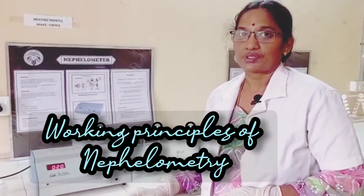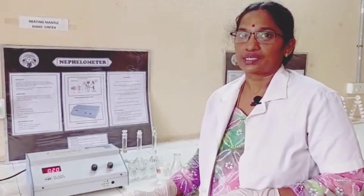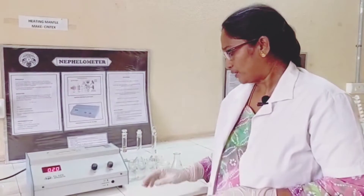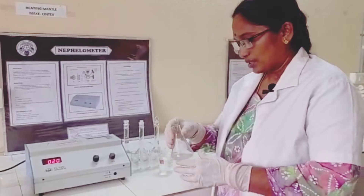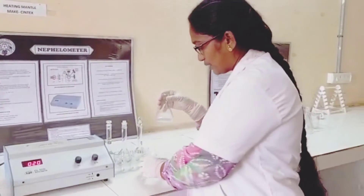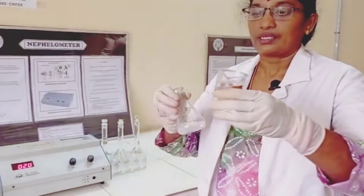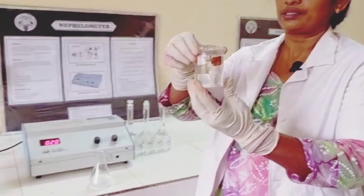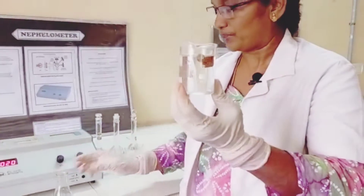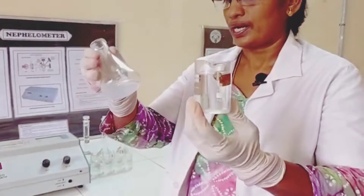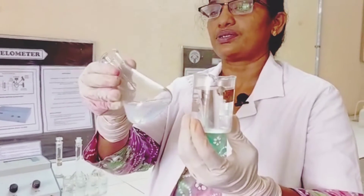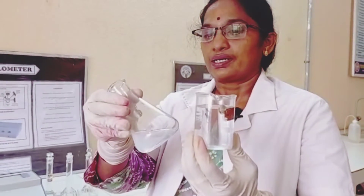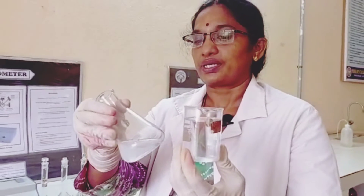Till now in my previous videos I have shown different estimations using spectroscopy where the solutions that were estimated were clear in nature. Today we are going to estimate solutions that are turbid and cloudy in nature. So you can see a difference between solution and suspension — this is a solution where the liquid is very clear and solute is dissolved in it, and this is a suspension where the solute is not dissolved but just suspended. So today we are going to estimate this type of suspension by using nephelometer.